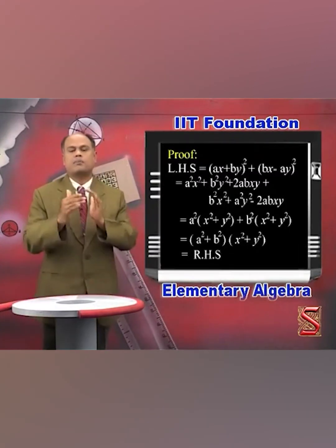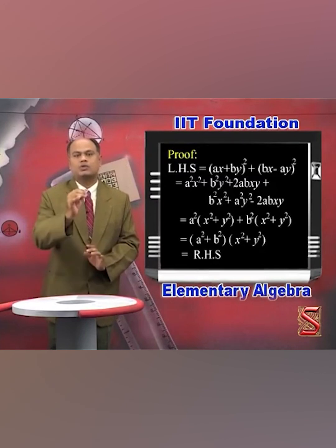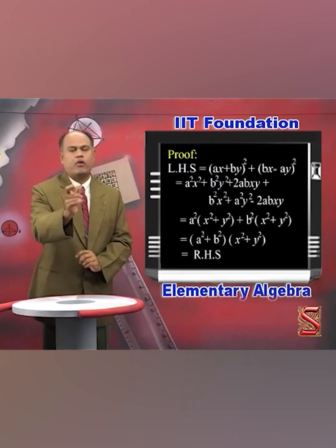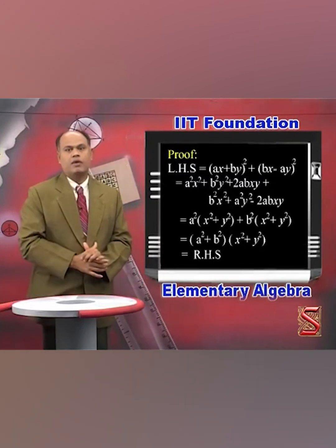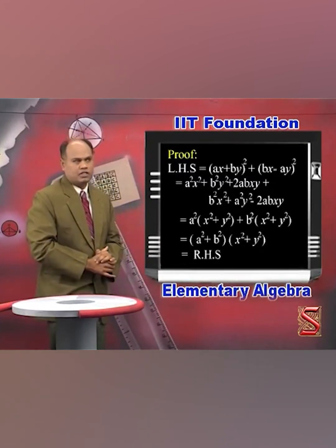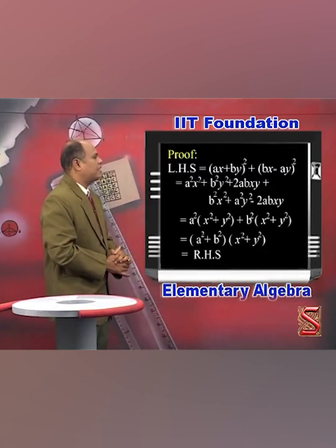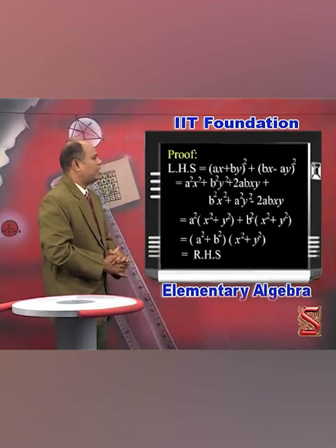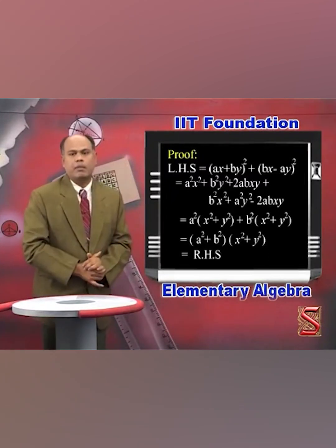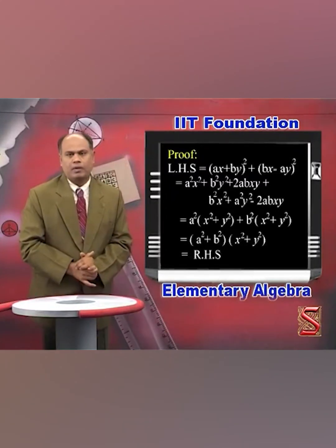We expand both squares using the (a + b)² formula, so we get the terms: A²x² + B²y² + 2abxy + B²x² + A²y² - 2abxy.